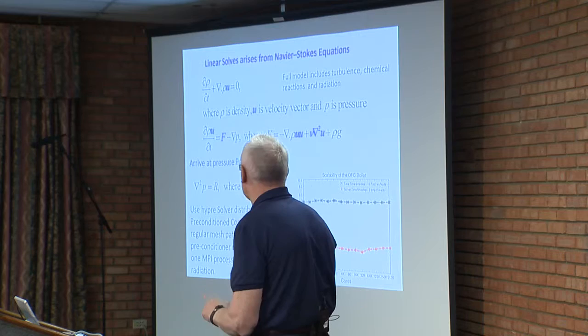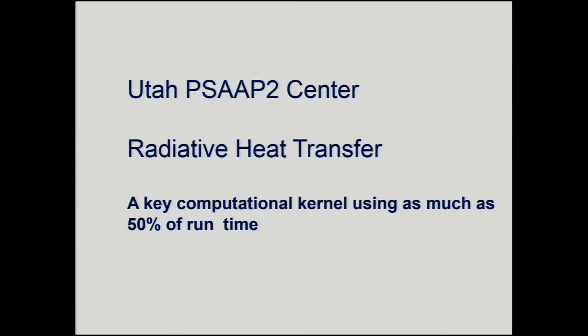To summarize portability: we have lots of different applications with users all over the world running this code on many different machines, from laptops up to machines like Mira and Titan. We've run on Blue Waters, Vulcan and Mira are our main production machines. We run on various Crays, DoD machines, and the Stampede machine. It was easy to port to the Xeon Phi, but getting performance has been an absolute disaster on that machine. So: portability, for sure; performance, not so much.